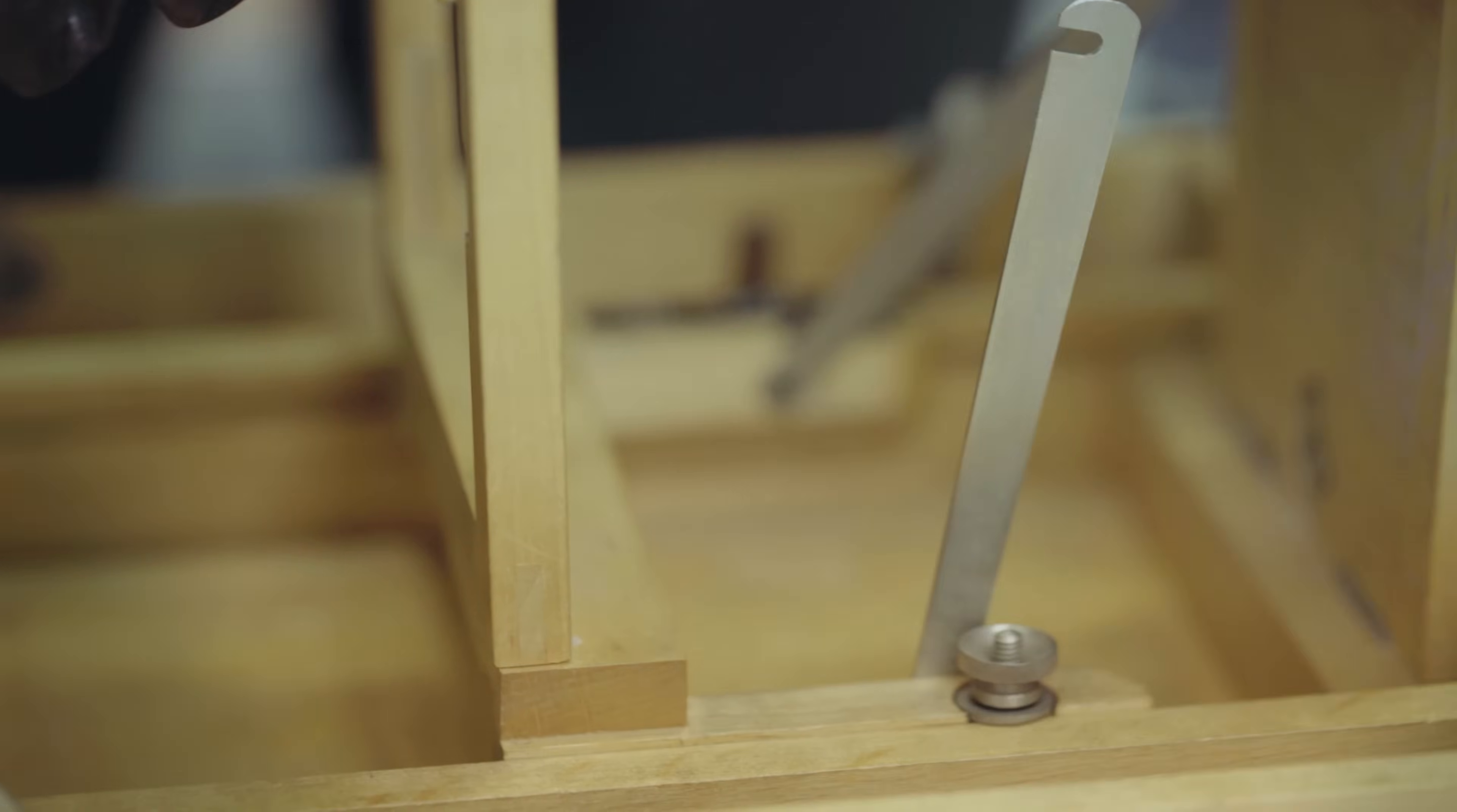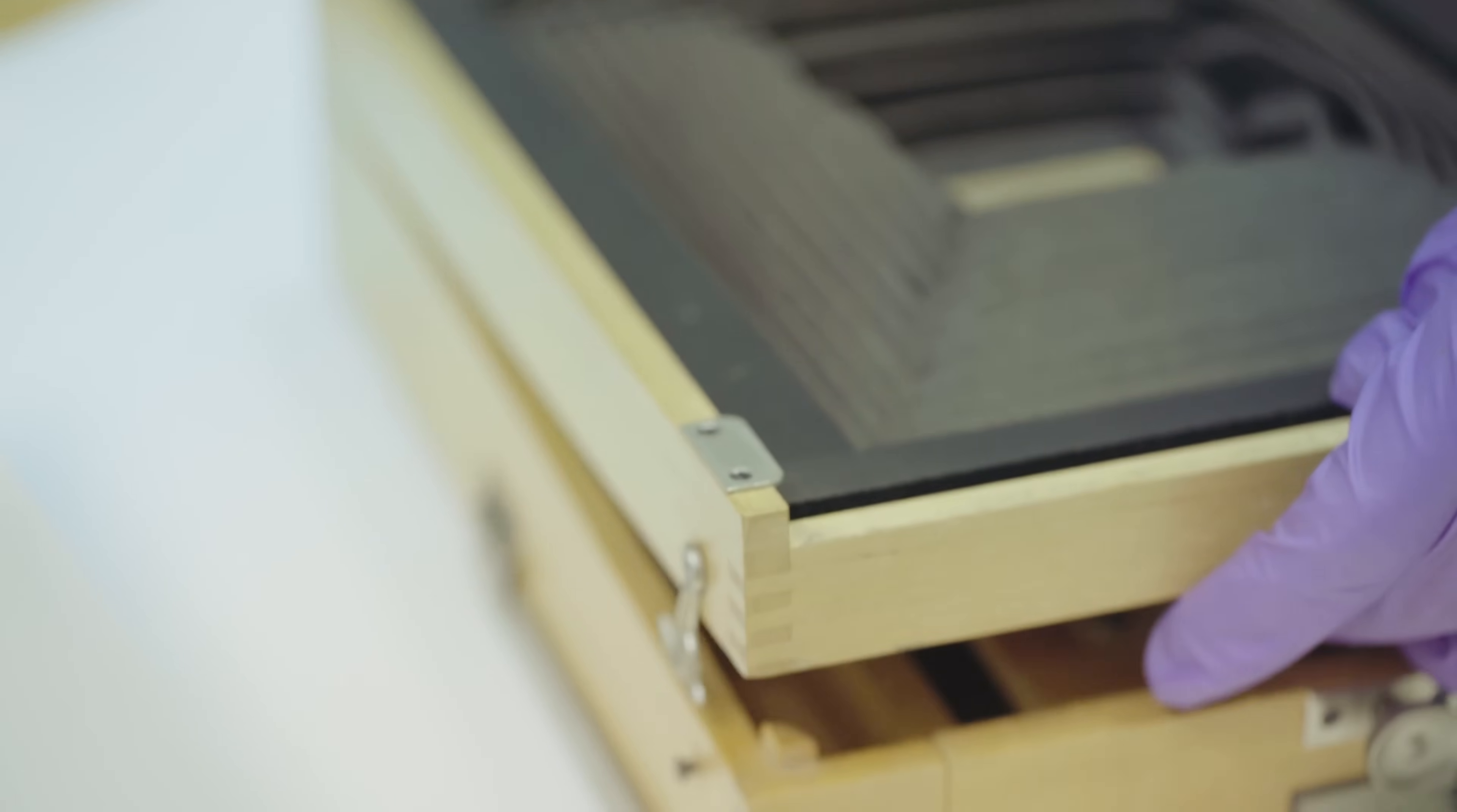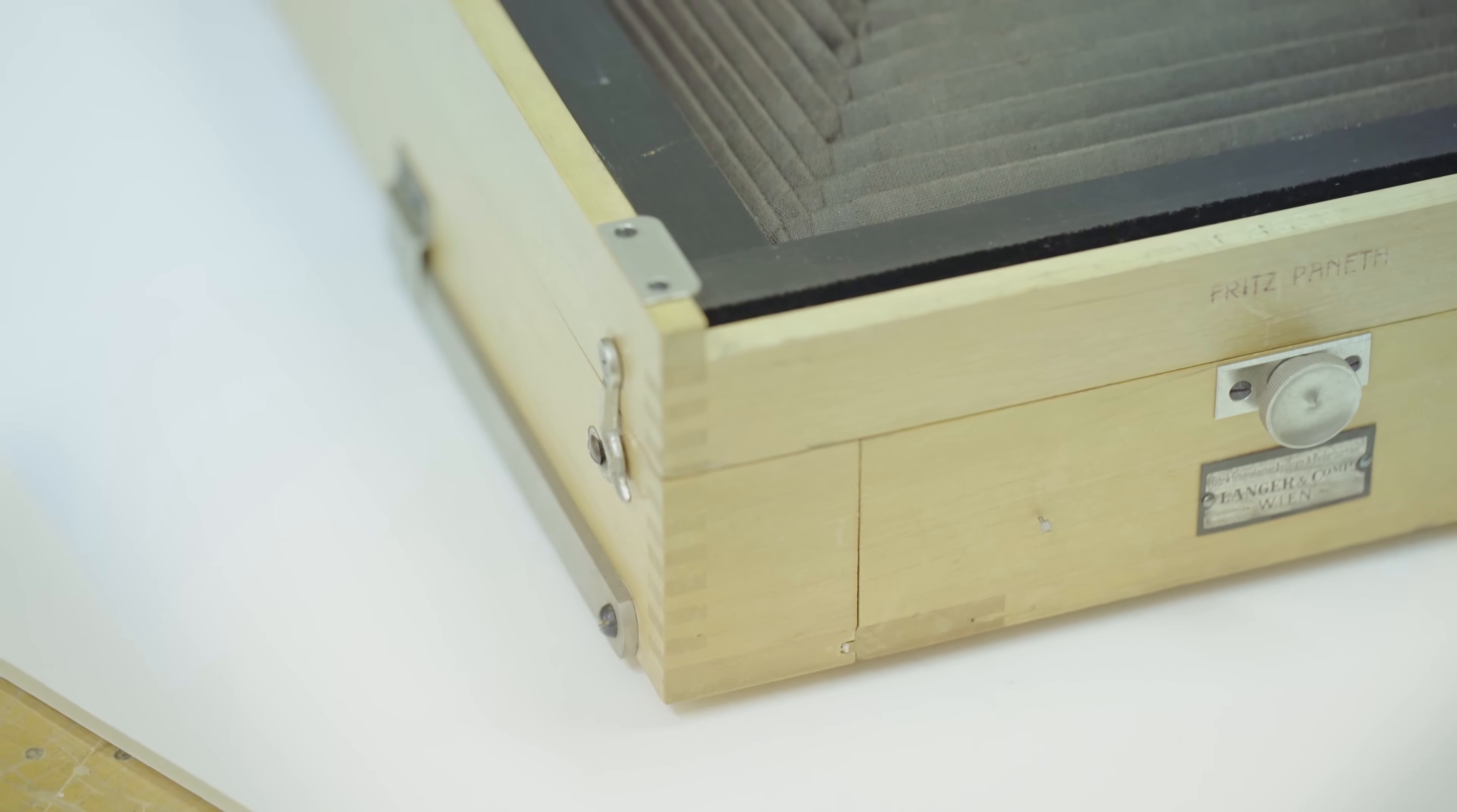At the moment this object doesn't have an electronic record on our catalogue, so we need to create one for it. We would go about this by describing the object, what it is, which is a daylight enlarger, and then we would measure some more tangible aspects of the item, such as its dimensions, its height, its depth, its width. We would like to know who owned it. We know that it was owned by Fritz Paneth, who produced it. We can see on the front here that it was produced by Langer and Komp. And then we'd also like to go into some of the aspects of its use.